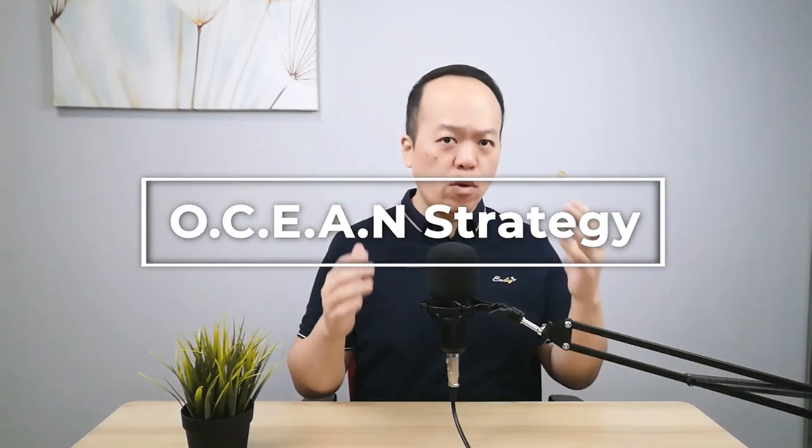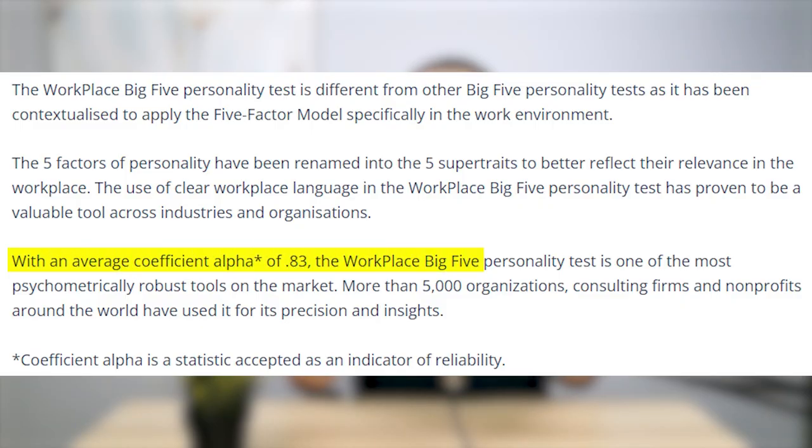I call it the OCEAN strategy, which is commonly known as the Big Five personality traits. According to research with a coefficient alpha of 0.83, the Big Five personality traits approach is one of the most psychometrically robust tools on the market, and thousands of organizations — including consulting firms and non-profits around the world — have used it for its precision and insights. So without further ado, let's jump in to explore the OCEAN strategy.